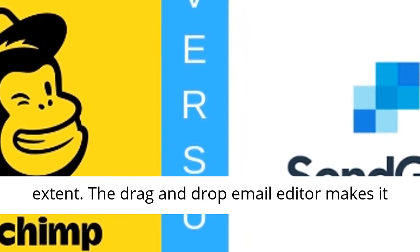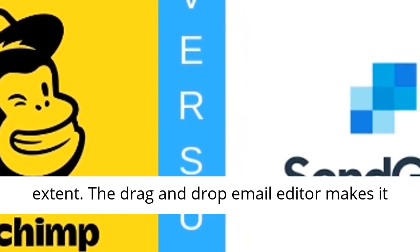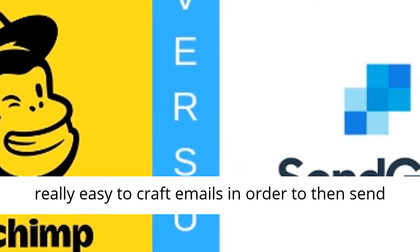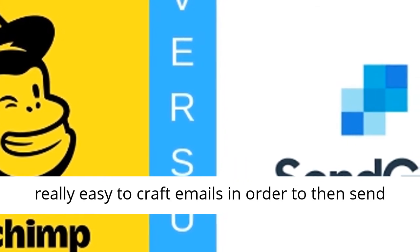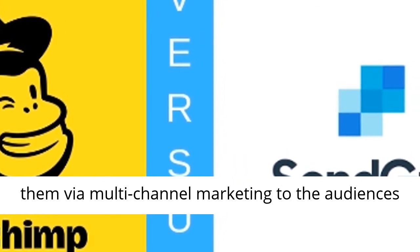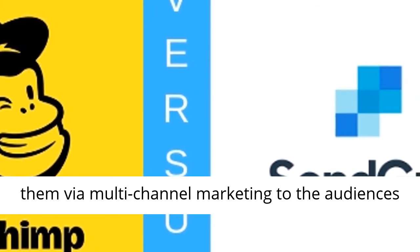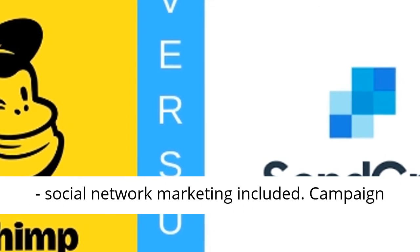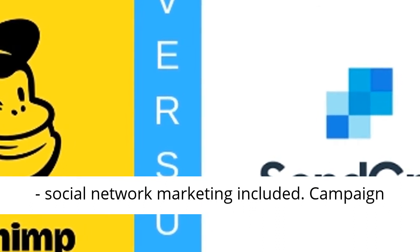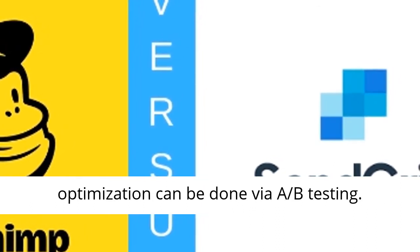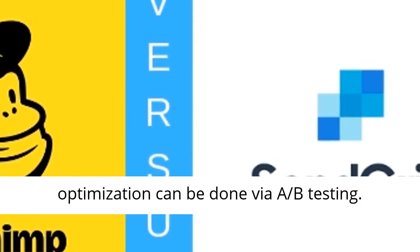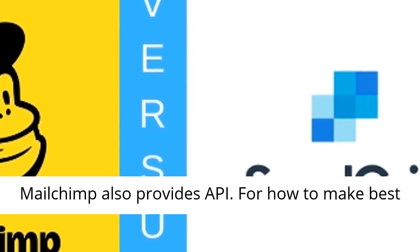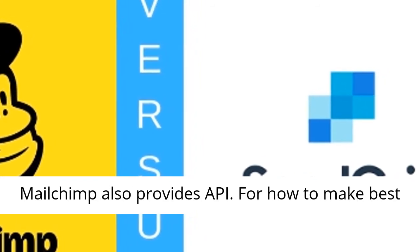The drag-and-drop email editor makes it really easy to craft emails in order to then send them via multi-channel marketing to the audiences, social network marketing included. Campaign optimization can be done via A/B testing. MailChimp also provides APIs.